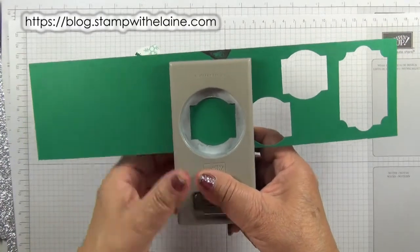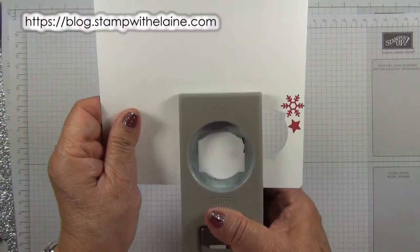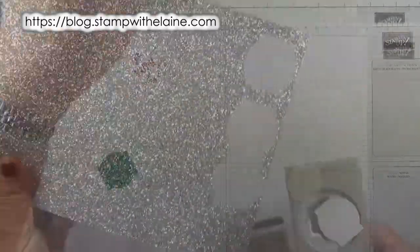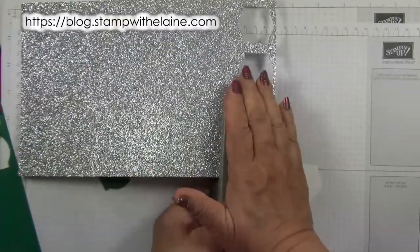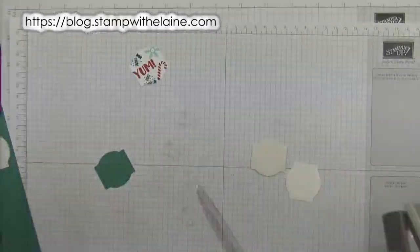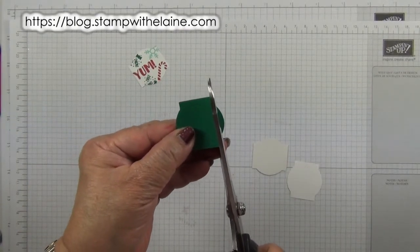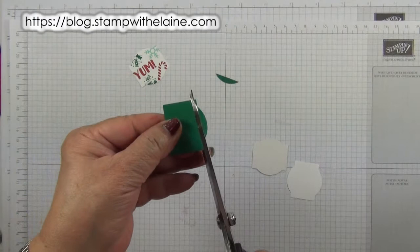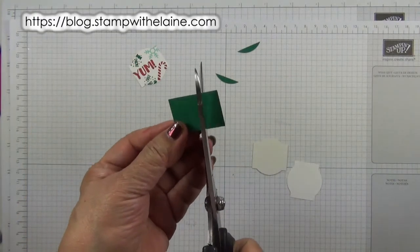Punch out a Shaded Spruce piece, another piece in Whisper White, and one in silver.